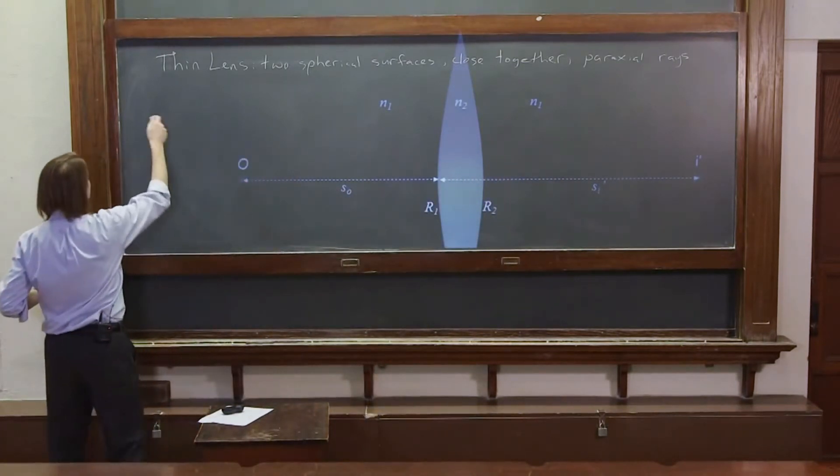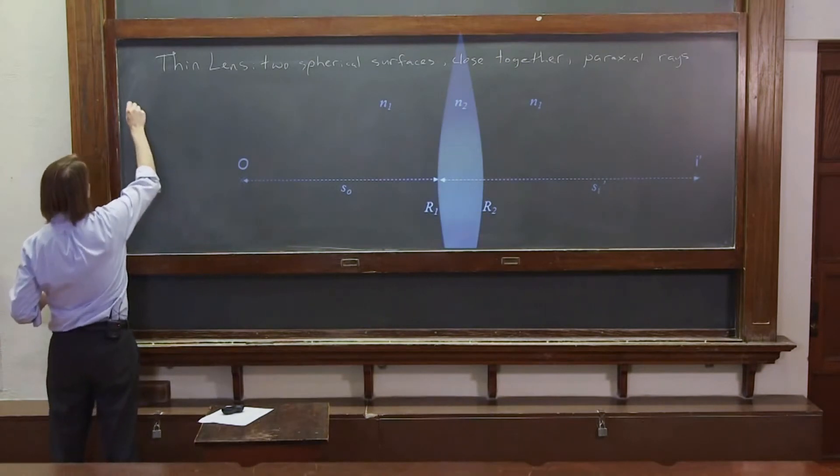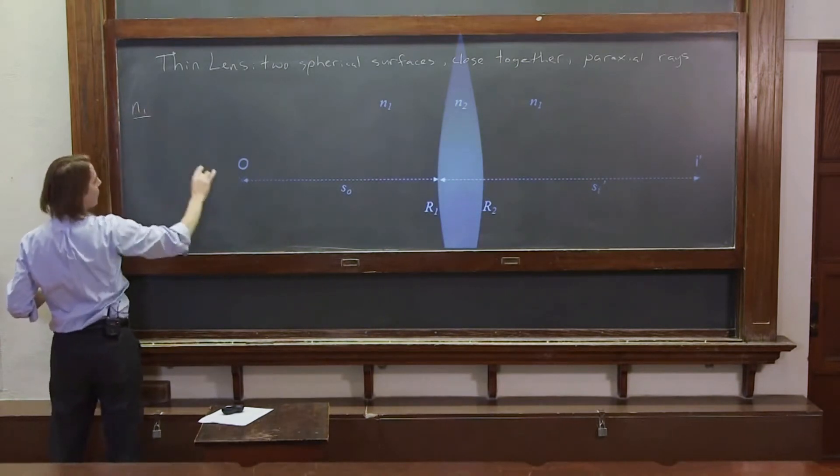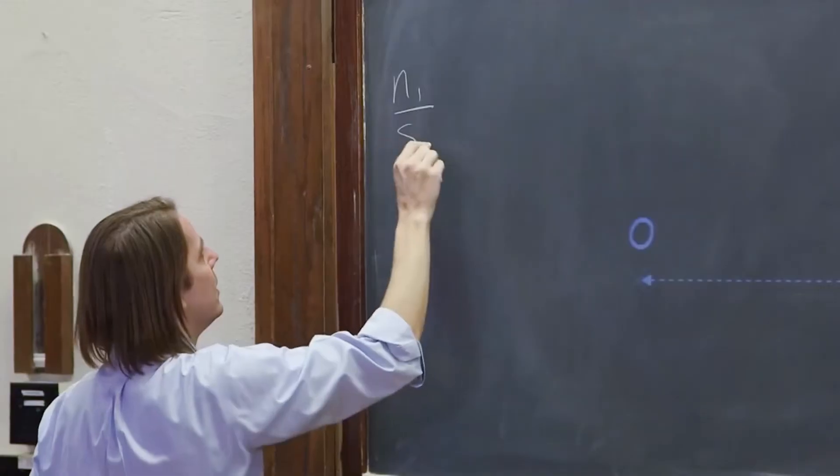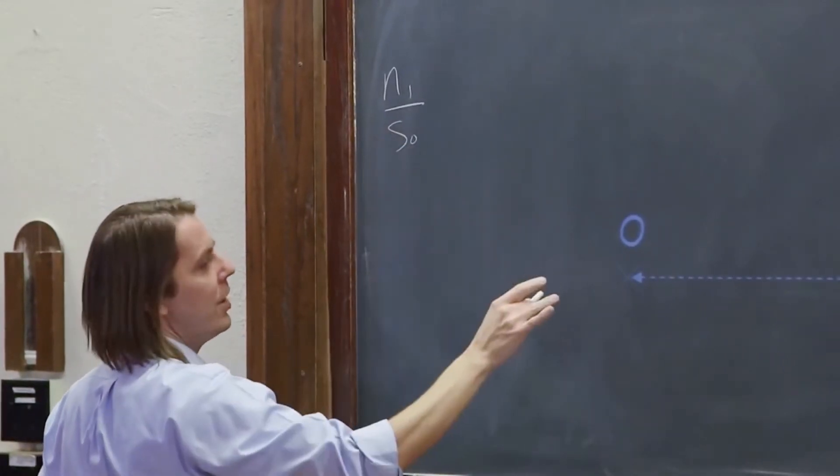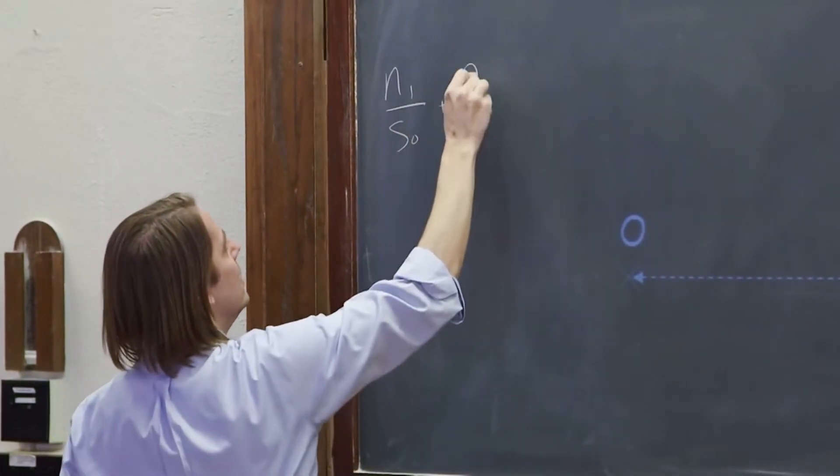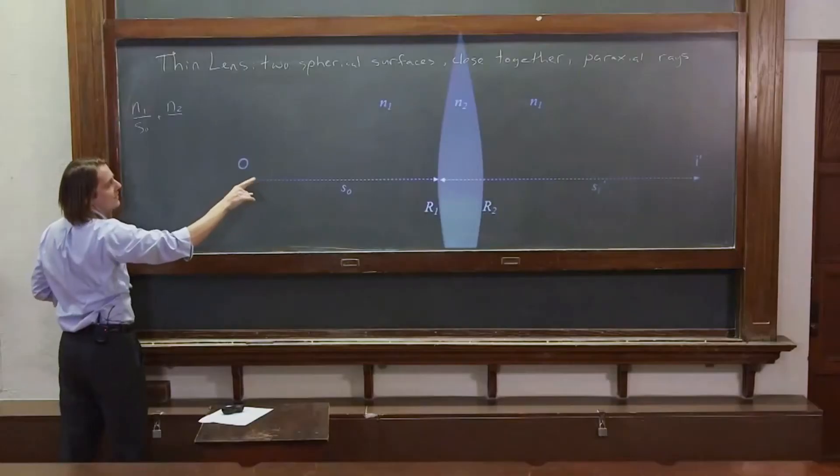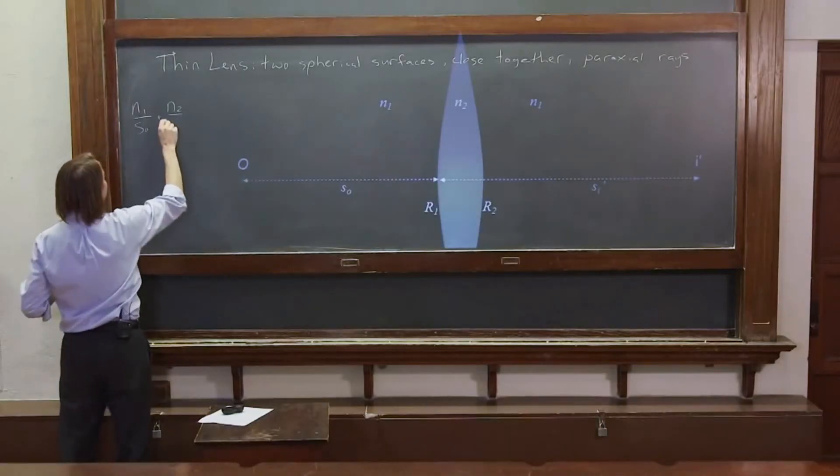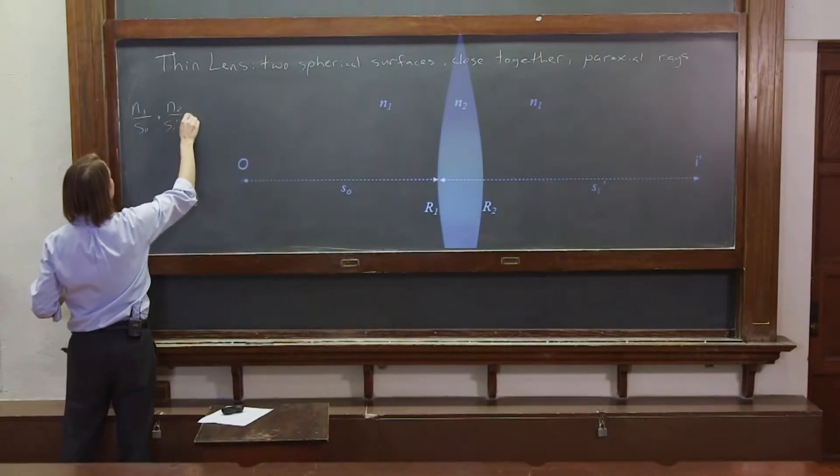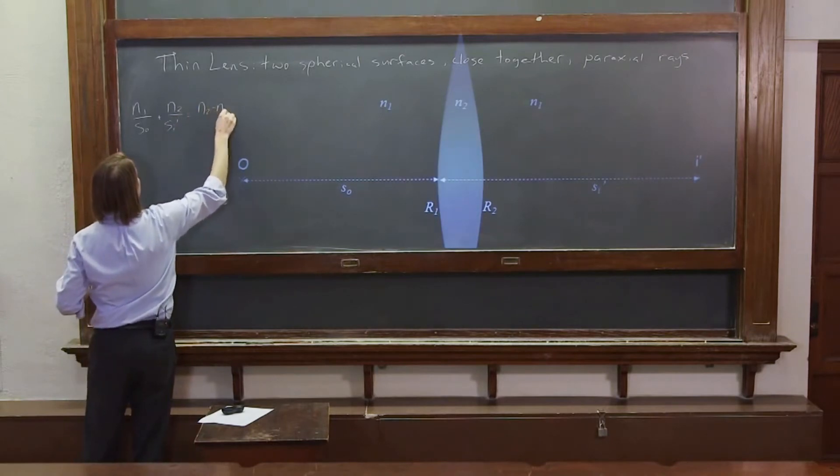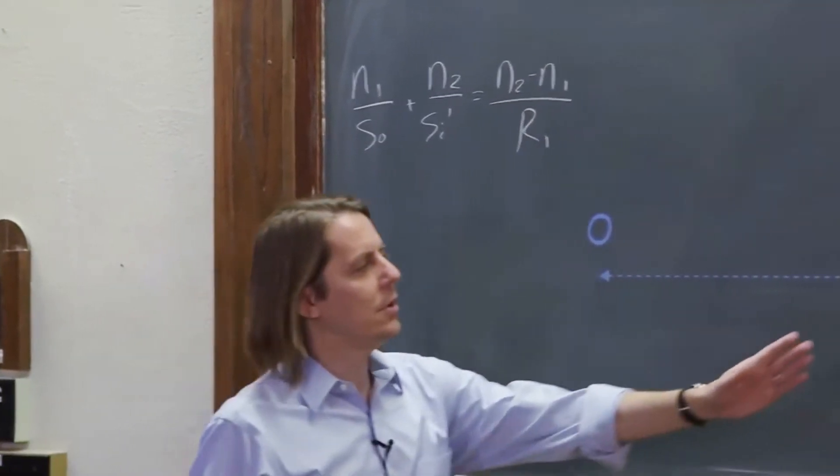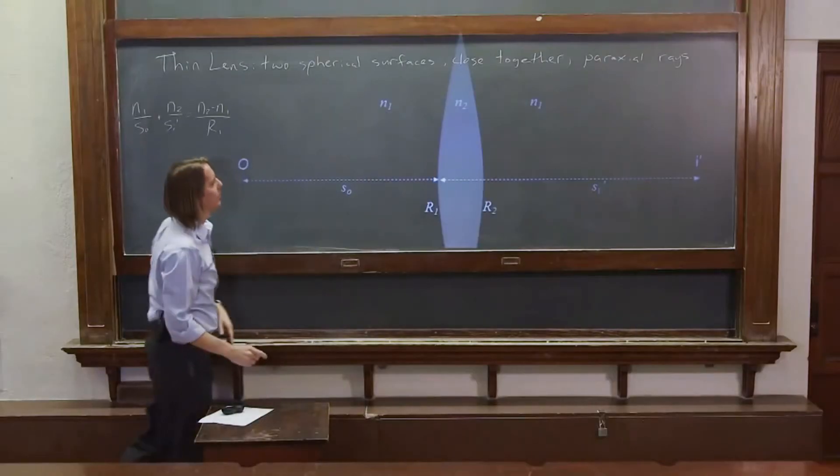So first, let's write our refraction equation for this first case. So N1 over the object distance plus N2 over the intermediate image distance SI prime equals N2 minus N1 over the radius